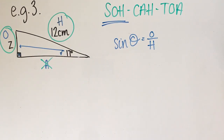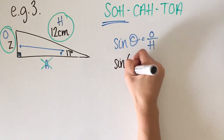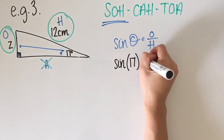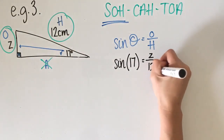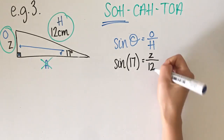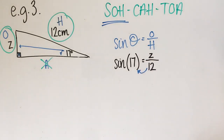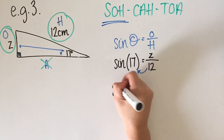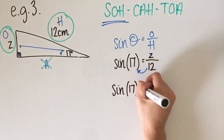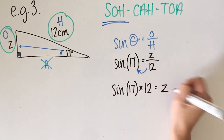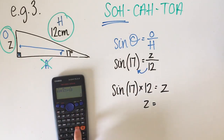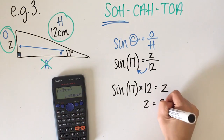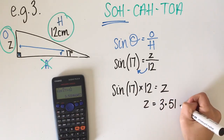Now it comes time to substitute. Sine of 17 degrees equals Z over 12. I need to get Z on its own, so I times both sides by 12: sine of 17 times 12 equals Z. On the calculator: sin(17) close bracket times 12 gives me 3.51 centimetres.